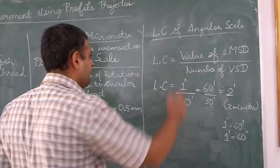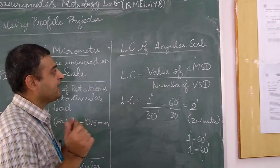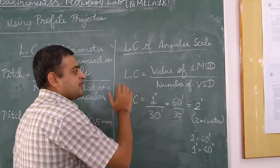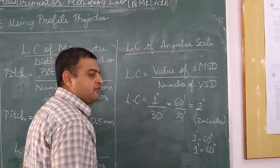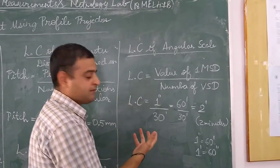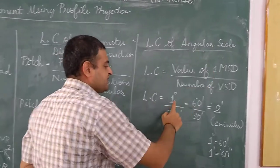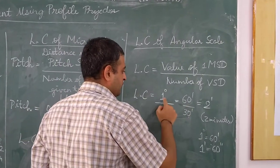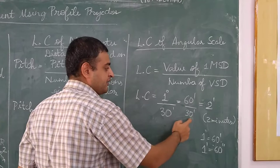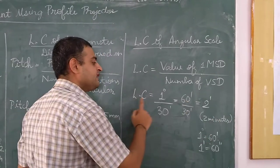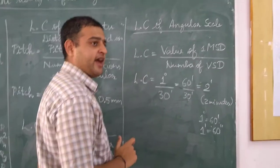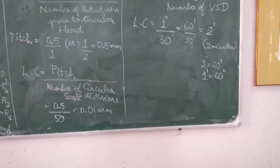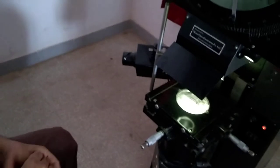For the angular scale used to measure the thread angle, the least count is given by the value of 1 MSD divided by the vernier scale divisions. The value of 1 MSD is 1 degree, and the value of 1 VSD is 30 minutes. So the least count is 60 minutes divided by 30, which equals 2 minutes. Thus, 2 minutes is the least count of the circular scale used to measure the angle. The experiment will now be demonstrated practically on the profile projector by Professor Mithun.